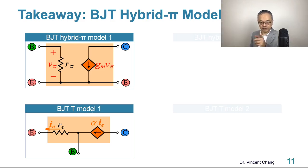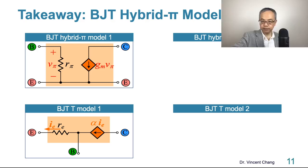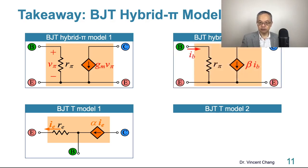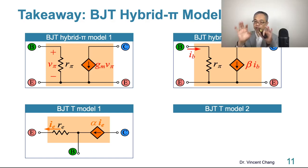But remember, we have model two. What is model two? It shows the current control current source. The control signal on the left-hand side emphasizes the voltage. But the control signal on your right-hand side emphasizes the input current. So it's current control current source. Both are equivalent.